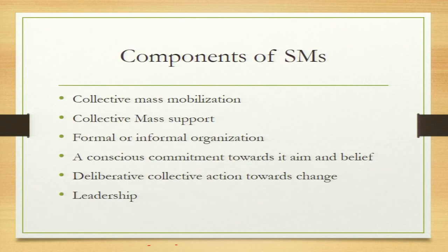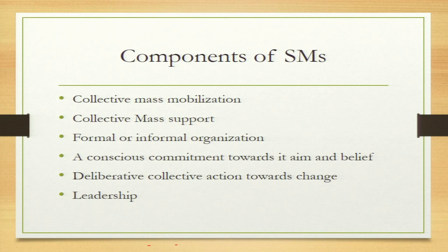Now let us talk about the components of social movements — what things do we need in order to have a social movement? First, we need collective mass mobilization; there should be a mass which is mobilized. Second, there has to be collective mass support; a social movement cannot take place without mass support. Third, you have to have a formal or informal organization, because in order to sustain a movement for a longer duration of time you need an organization.